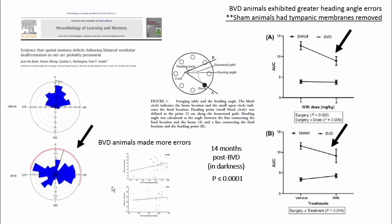Another category of evidence for vestibular dysfunction contributing to spatial memory loss comes from animal studies — there are now 20 to 30 different animal studies. This is one that we did, in rats at 14 months following bilateral vestibular loss, which is quite a long time point after the lesions.